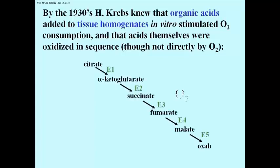Here are the acids, and as they are oxidized, you see the oxygen slowly being consumed. The pathway begins with citric acid and ends with oxaloacetate, whose fate was not known at the time.